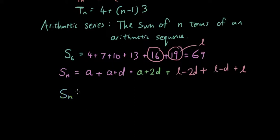So Sn is now equal to, how many a's do we have? We got a plus a plus a. So that's 3a plus how many l's do we have? We have l, l, l, 3l. So the a's and the l's are gone.